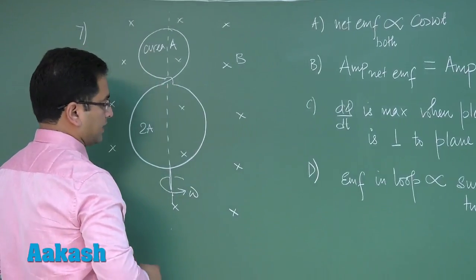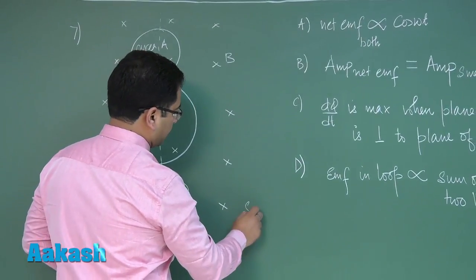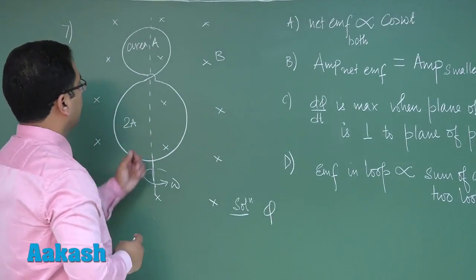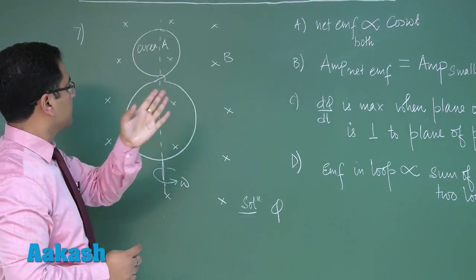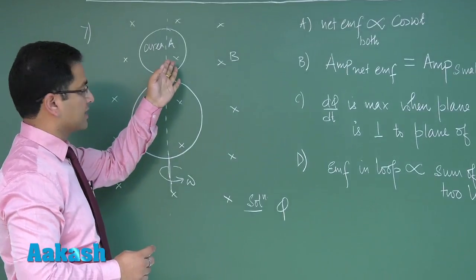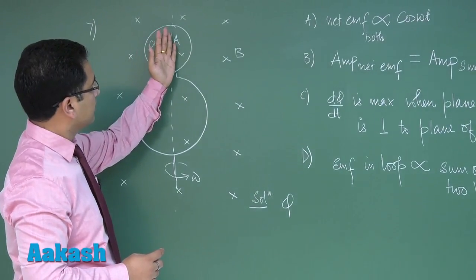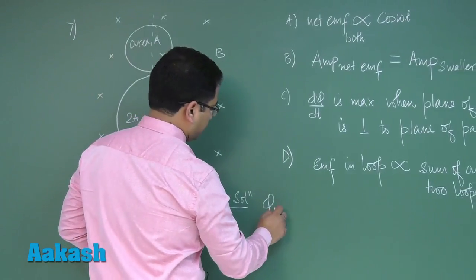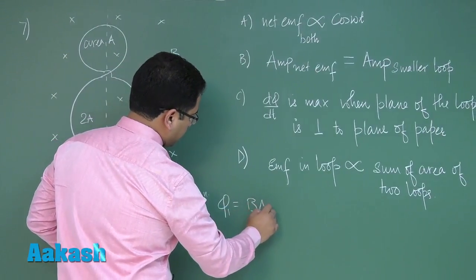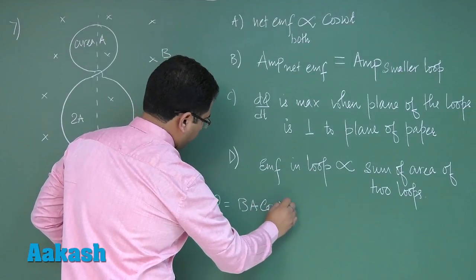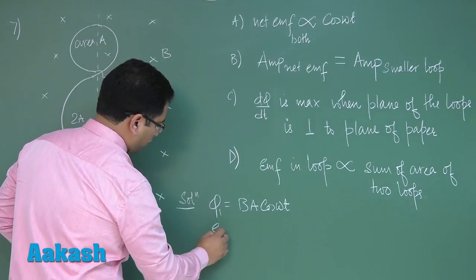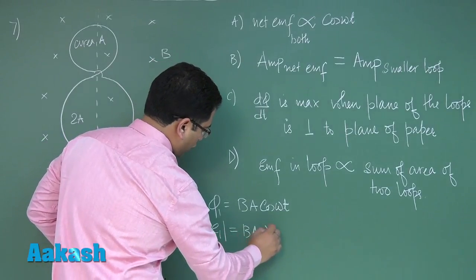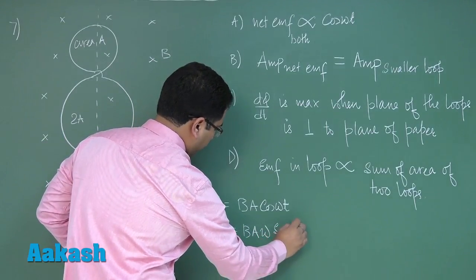EMF on the first loop. The flux on the first would be phi. Initially the angle between the magnetic field and the area vector is zero. At any time t, the angle would be theta which equals omega times t. So phi 1 becomes B A cos omega t, and the magnitude of the EMF would be B A omega sine omega t.